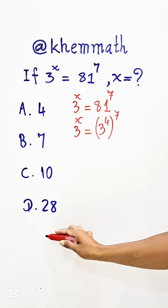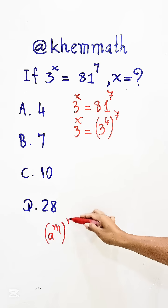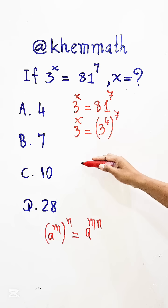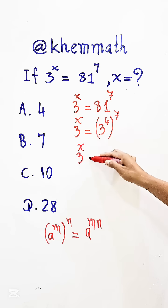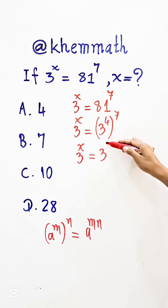Using the formula (a^m)^n = a^(m×n), we get 3^x = 3^(4×7), which equals 3^28.